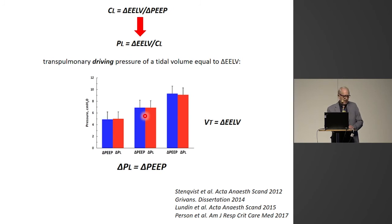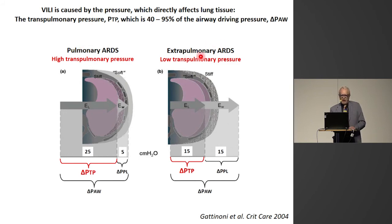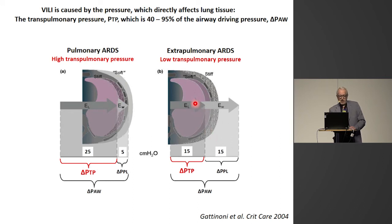What are the clinical implications? Looking at a Gattinoni paper from 2004: in pulmonary ARDS with direct damage to the lung, and in extra-pulmonary ARDS originating from sepsis and peritonitis — in both cases the airway pressure is 30. But in pulmonary ARDS, with a stiff lung and soft chest wall, the transpulmonary driving pressure is 80% of the airway driving pressure. In extra-pulmonary ARDS, where the lung is fairly soft and the chest wall is stiff, the transpulmonary driving pressure is only half of the airway driving pressure.